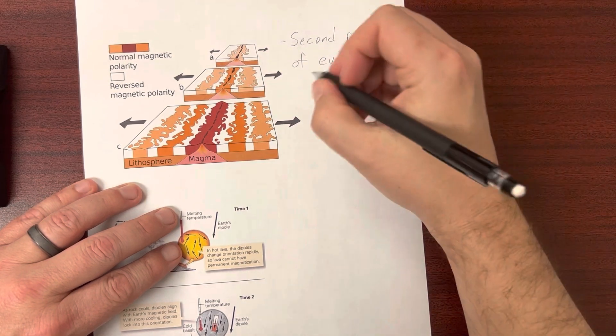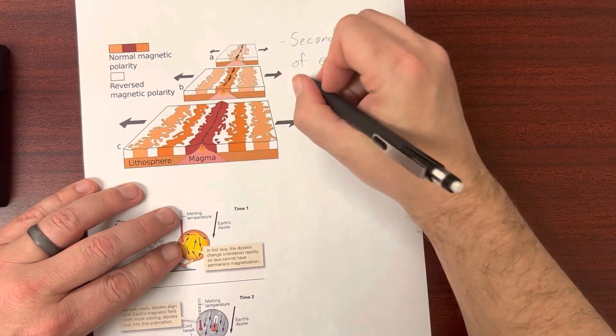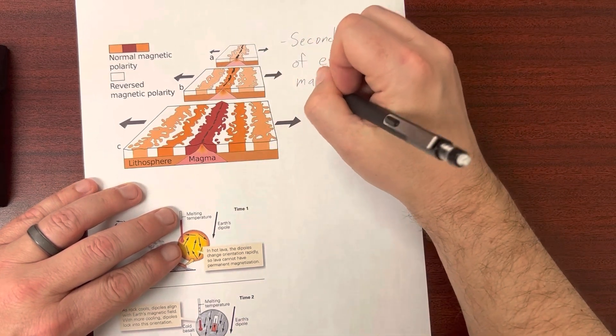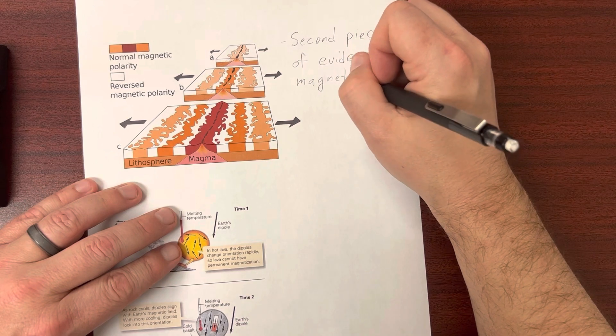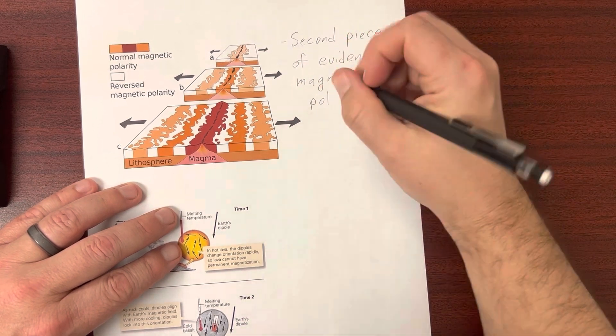And what this means, or what we see, are these bands of alternating magnetic polarity. So I'm going to have to explain that one a little bit.